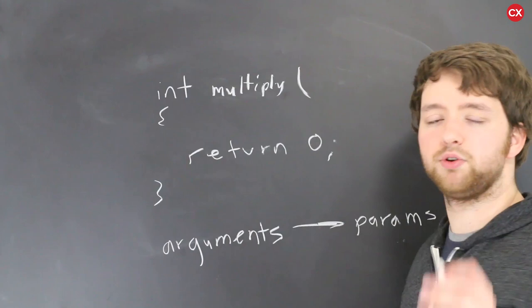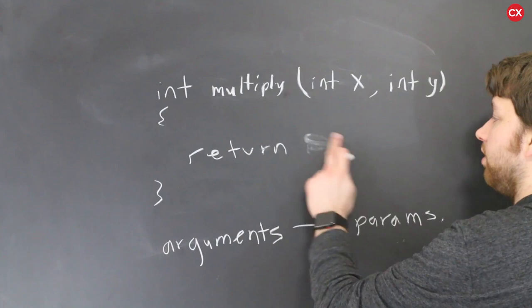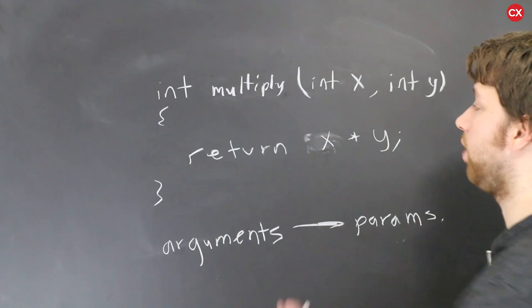Multiply. And what this is going to do is it's going to take two arguments and store those in two parameters. We define their types. These are going to both be integers. We can give them whatever name we want. We can say x and y. Then instead of returning zero what we can do is we can say return x multiplied by y. And there we go. We just defined a function.